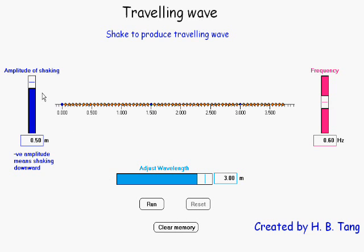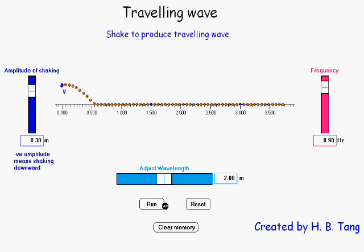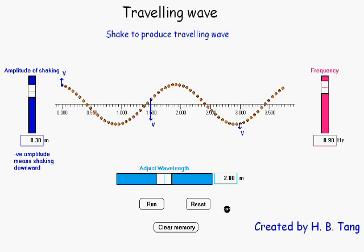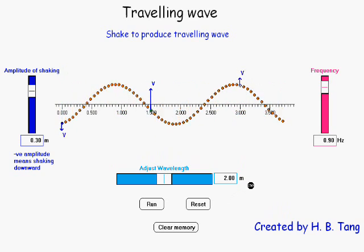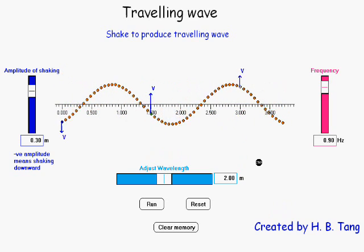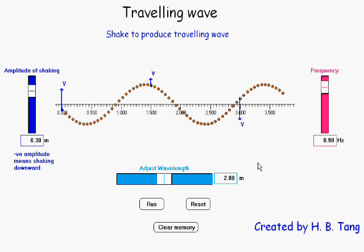This time, I'm going to adjust the amplitude to be 0.30 meter, the frequency 0.90 hertz, and the wavelength 2 meters, and run the simulation again. Thank you.